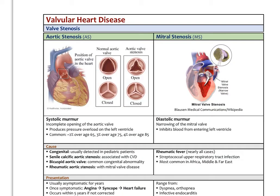The most common types of stenotic valves are the aortic and mitral valves. In stenosis, the valve gets narrowed and doesn't close effectively. With aortic stenosis, the valve doesn't fully open, decreasing cardiac output and increasing the pressure the left ventricle must push against. Over time, this causes left ventricular hypertrophy. The valve also doesn't close entirely, causing some backflow and regurgitation into the ventricle, worsening the situation. This creates a systolic murmur.